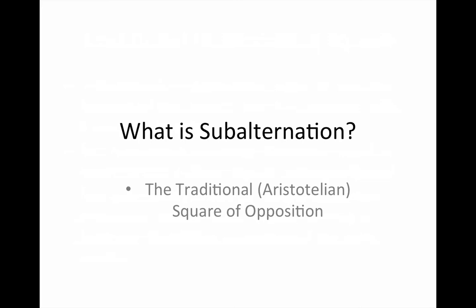Combining those, we have four proposition types in categorical logic: universal affirmative, universal negative, particular affirmative, and particular negative. I'm also going to assume that you are familiar with Venn diagrams and the shorthand for categorical propositions.